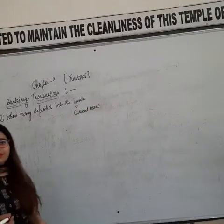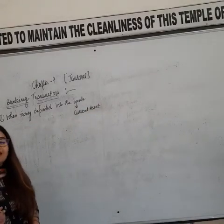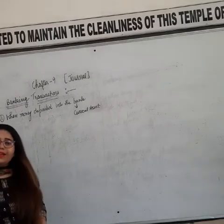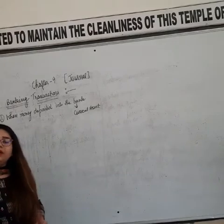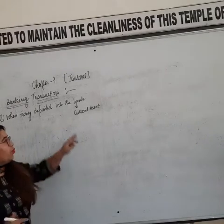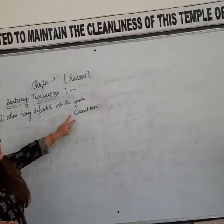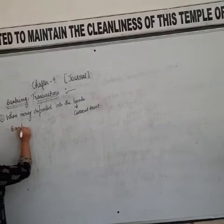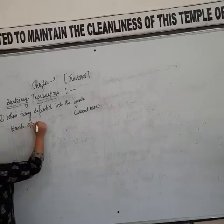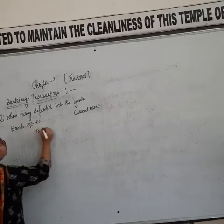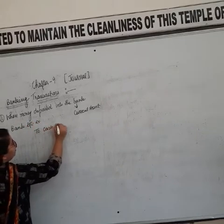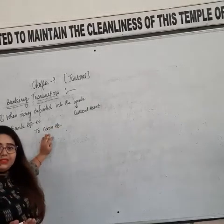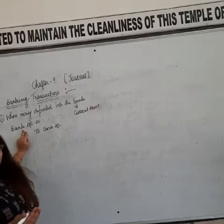When cash is deposited into the bank, it means our current asset — bank — is increasing. If our bank account is increasing, then according to the real account rule, what comes in must be debited. What is increasing? That is the bank account. So, bank account is debited. Why is cash credited? Because cash is going out from the business. That is why bank finances are increasing.